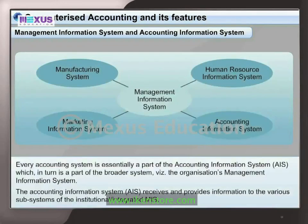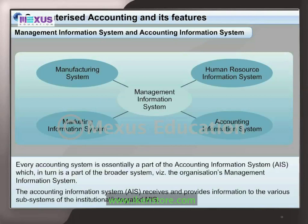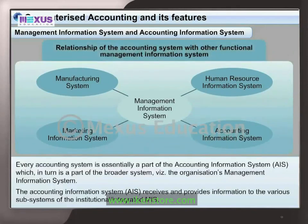Every accounting system is essentially a part of the Accounting Information System, or AIS, which in turn is a part of the broader organization's Management Information System. The AIS receives and provides information to the various subsystems of the institution, forming an integrated MIS. The following diagram shows the relationship of the accounting system with the other functional management information systems.